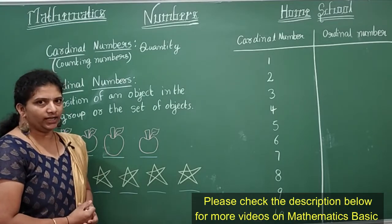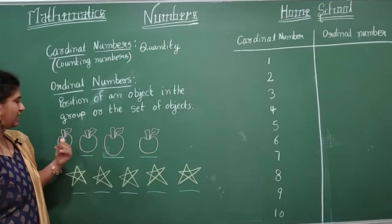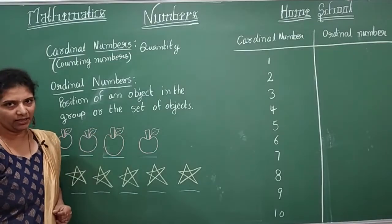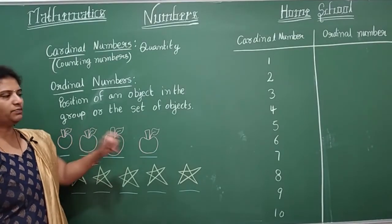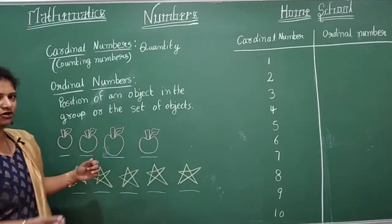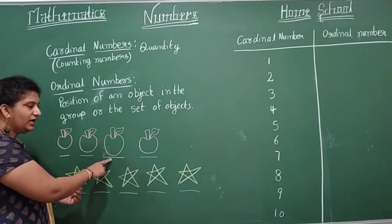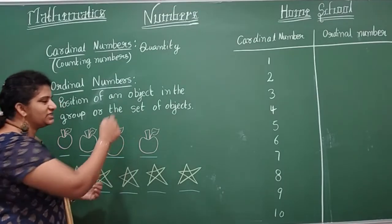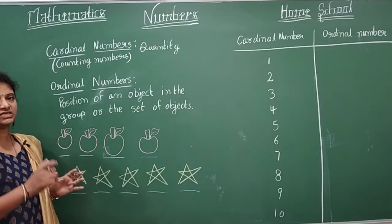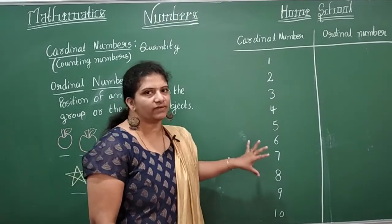Using the same apples — when we count 1, 2, 3, 4, there are four apples, as we said using cardinal numbers. Now, what is the position of the last apple? First, second, third, fourth — the last apple is at the fourth position. So saying the position of a number is called the ordinal number.